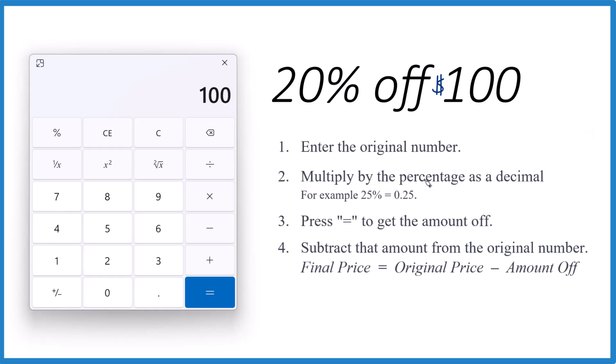And then we're going to multiply that by the percentage as a decimal. So 20% becomes 0.20, or just 0.2. So times 0.2, and then we press equal sign, and that gives us this number 20.